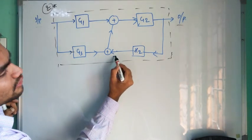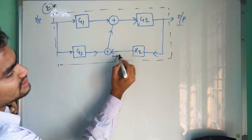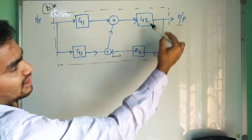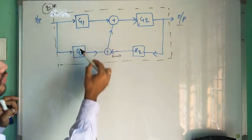Now we can split that. Here you can see this is the negative symbol that is given, which means that these two blocks are in feedback and these two are in parallel.